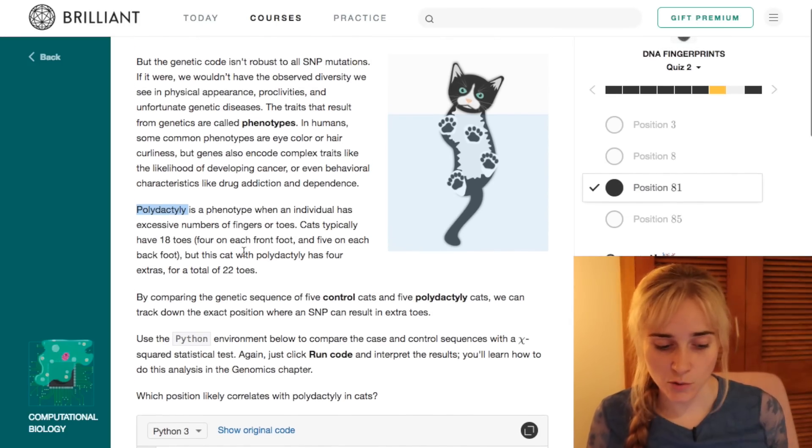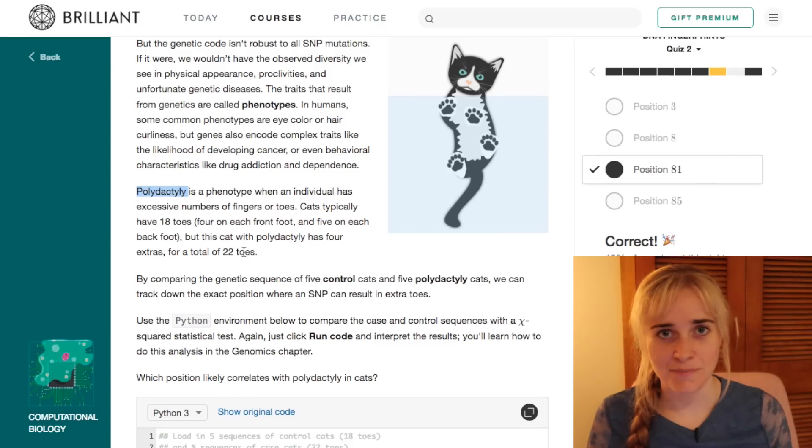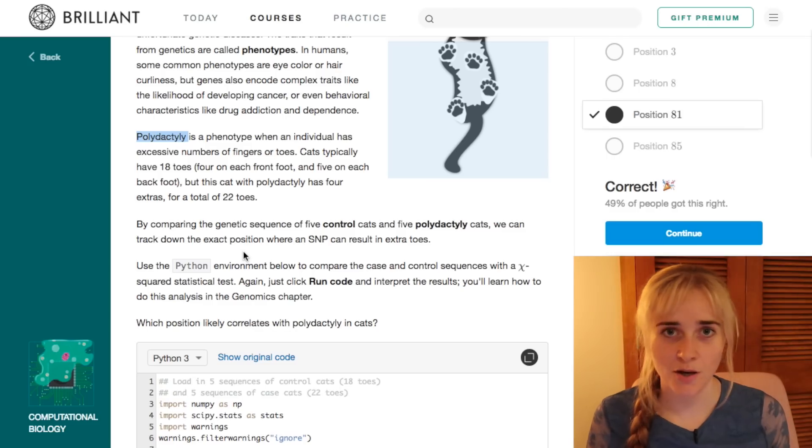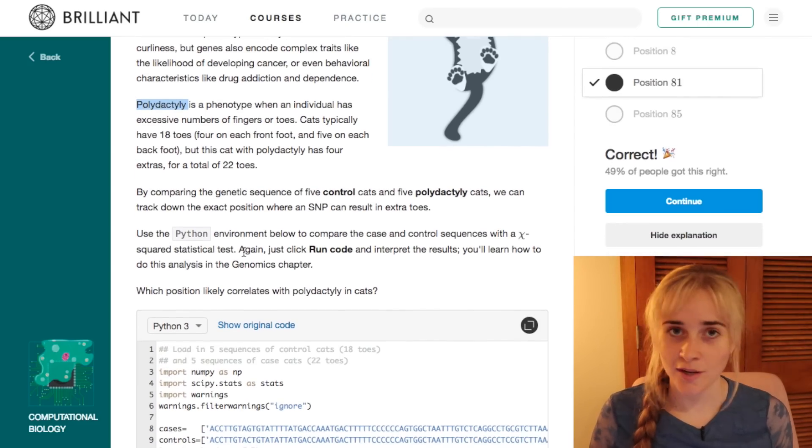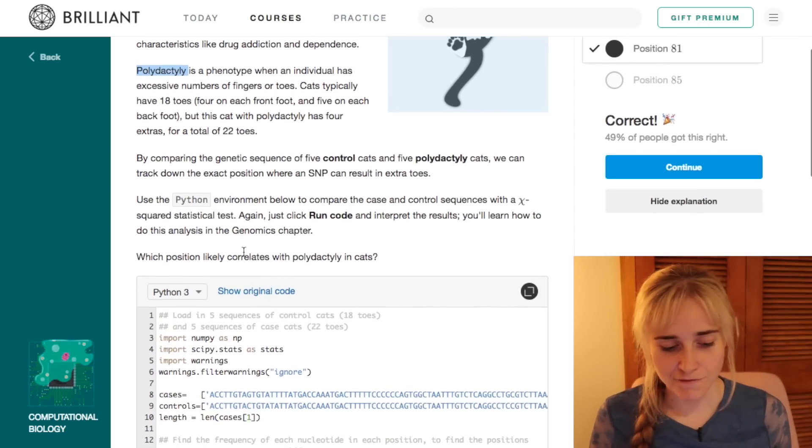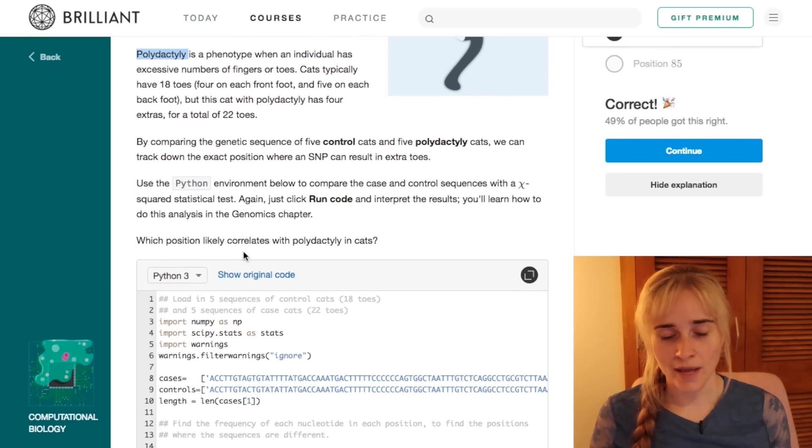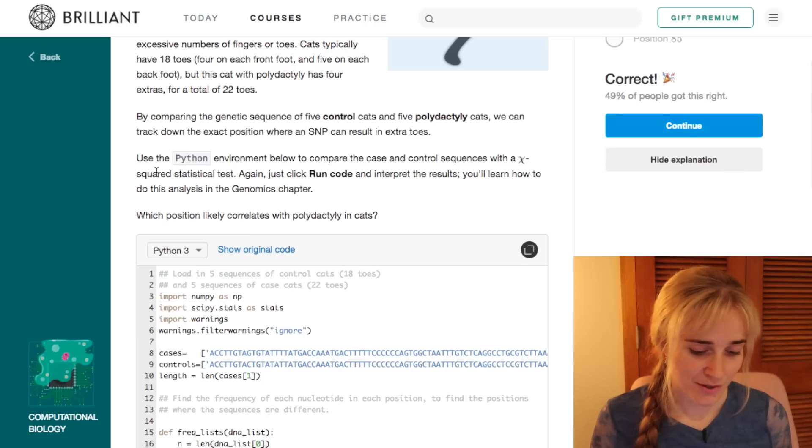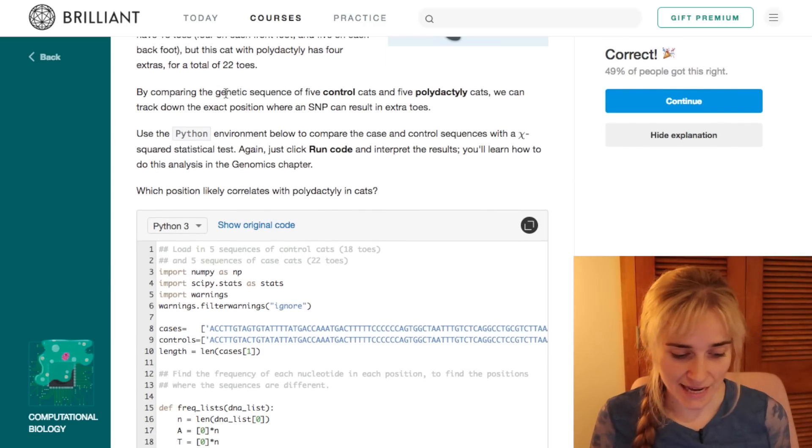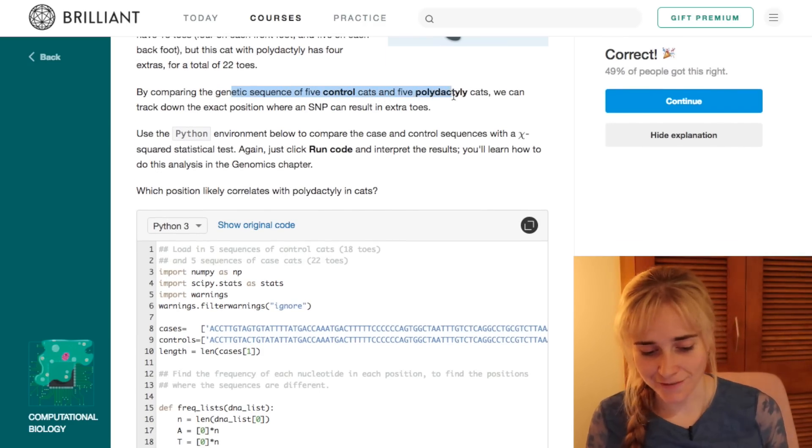So this condition is caused by mutations, and this time the mutations are propagating through to actually change the individual, what it looks like. We can use a combination of coding on Python and some statistical methods to actually find out where the offending mutation occurs in the DNA of the cats. So the way we're going to do this is to compare the genetic sequence of five control cats and five affected cats.